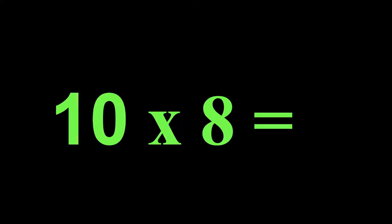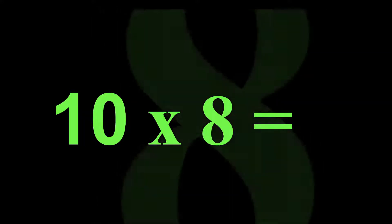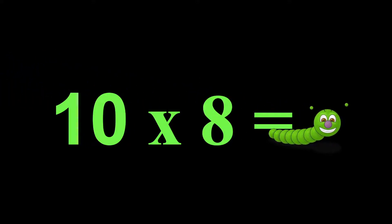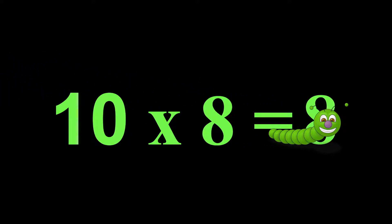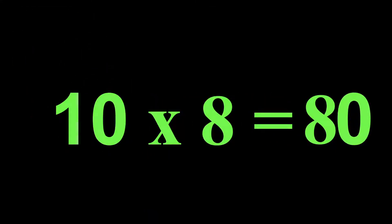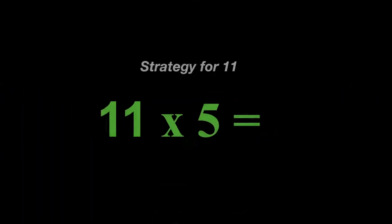So 10 times 8 — the other number is 8. So we are going to start with that. Wally, can you show us where to go? So we take our 8. Are we done? No, we have got to add the 0, and so 10 times 8 is 80.